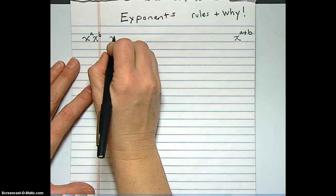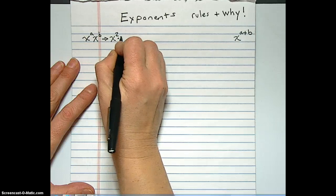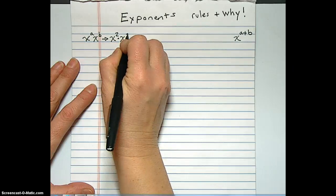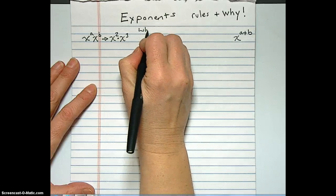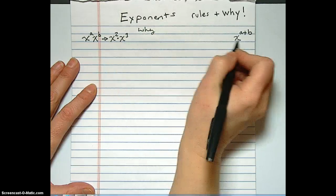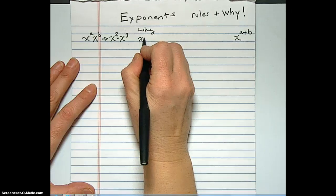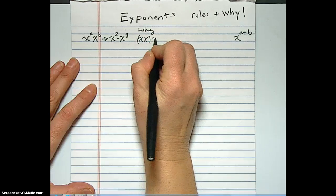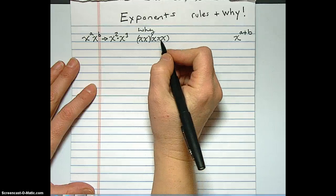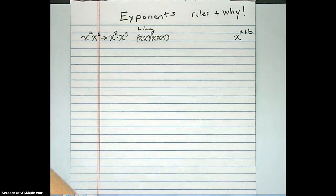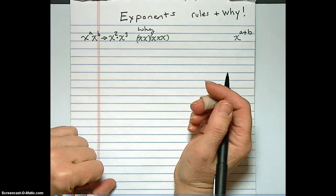Let's do x squared times x cubed. And let's look at what's really, really going on, not just memorizing rules. So x squared is xx and x cubed is xxx. And what operation is going on in between all of those x's? Multiplication. Okay, so they're all multiplying.